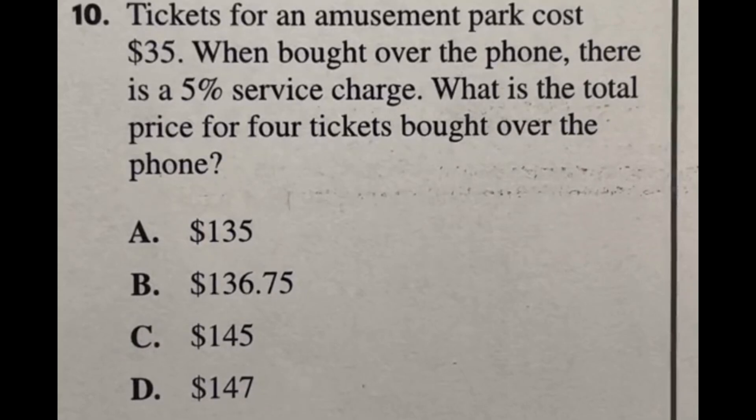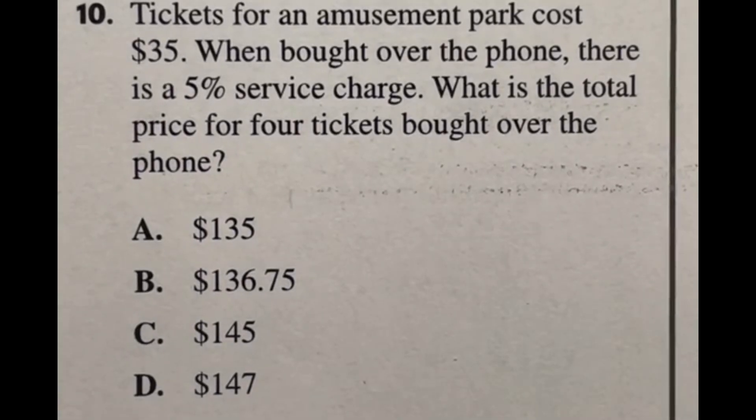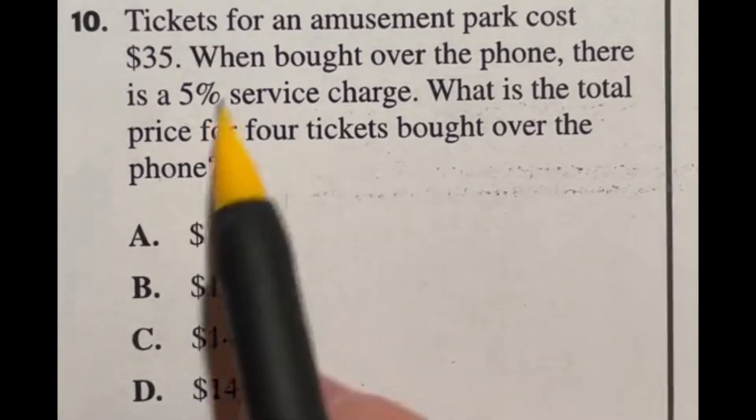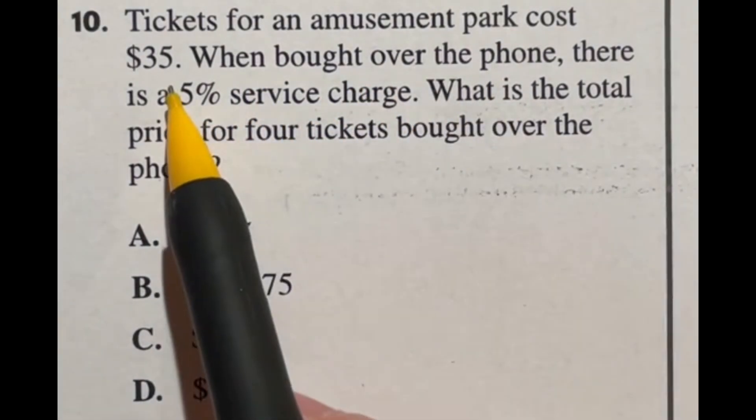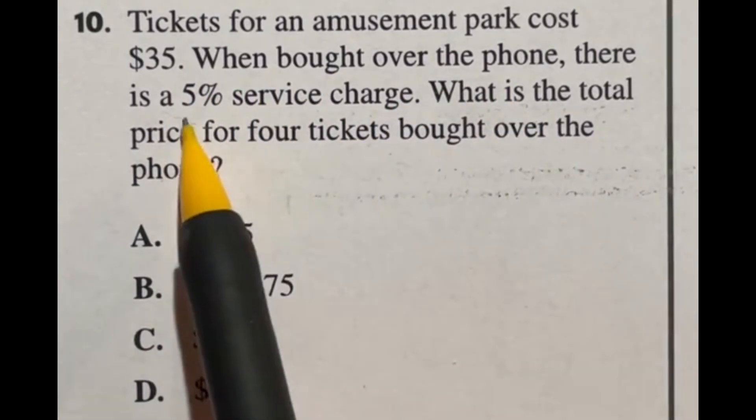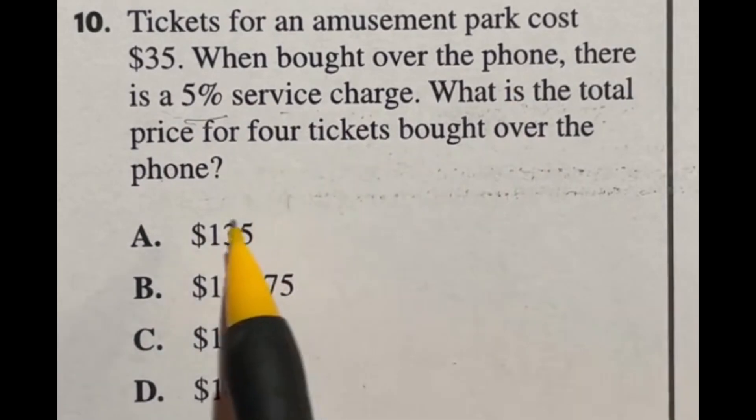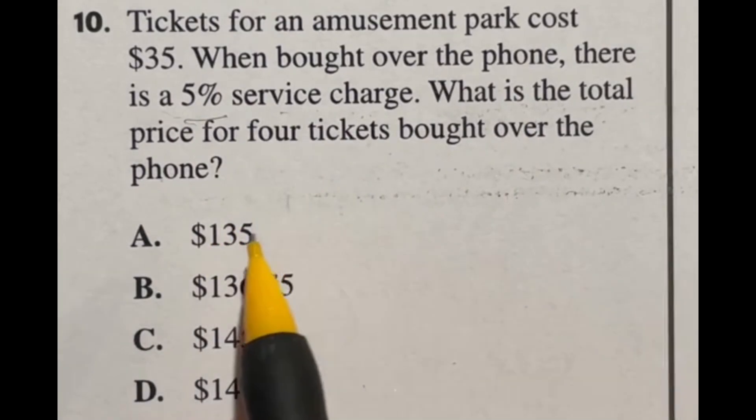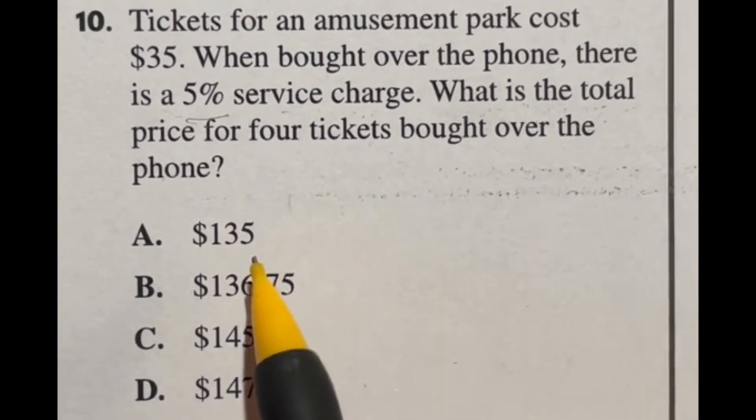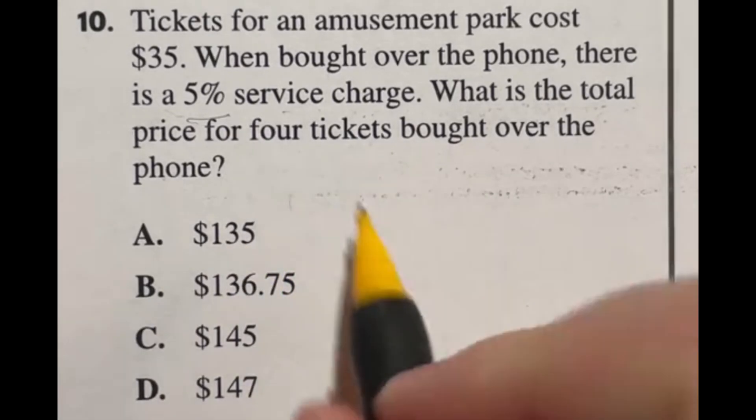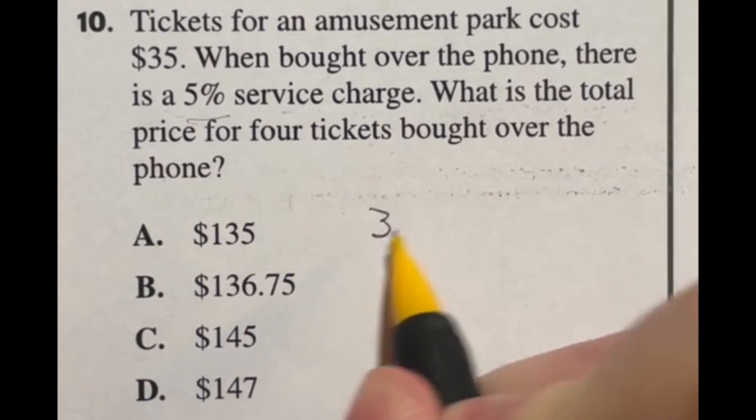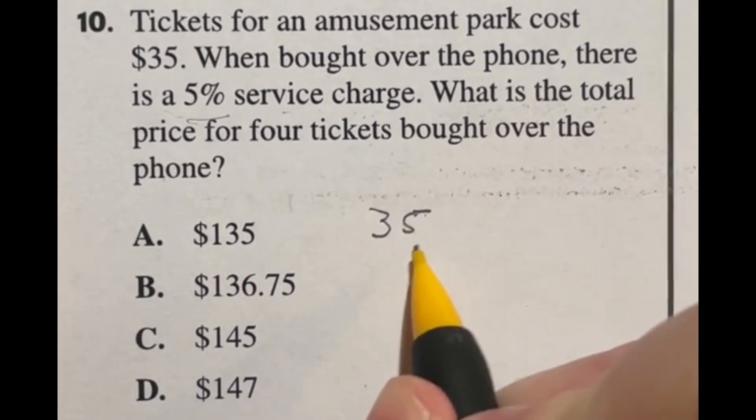Number 10 is also dealing with percents of a total. But let's look at the question in full. It says tickets for an amusement park cost $35 each. When bought over the phone, there is a 5% service charge. What is the total price for four tickets bought over the phone? So we're looking at a total price here. First thing we need to find out is how much do the tickets actually cost? So we're going to do 35 times four.